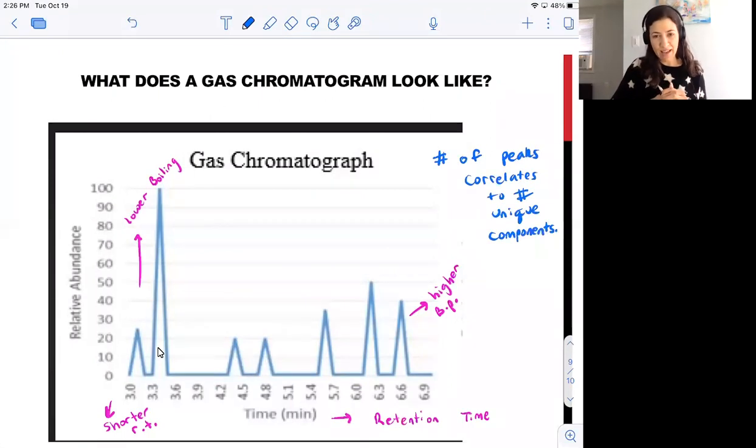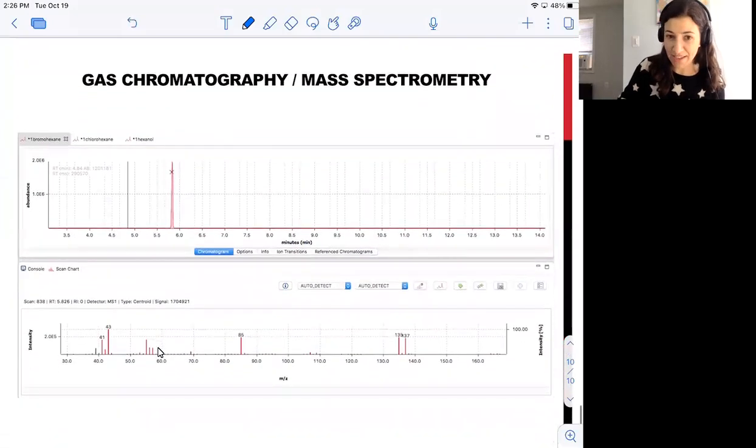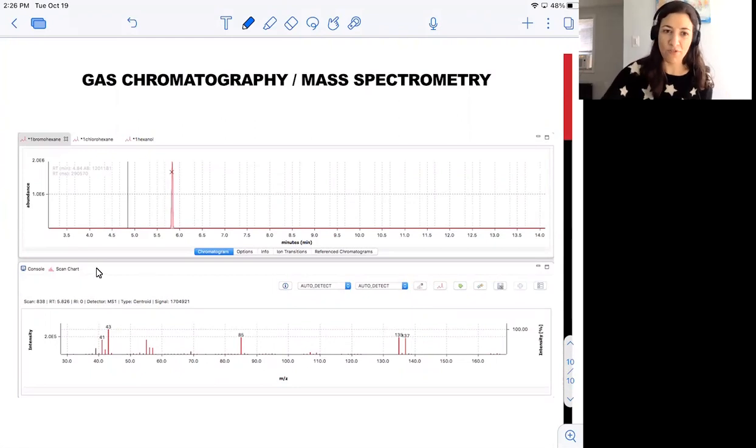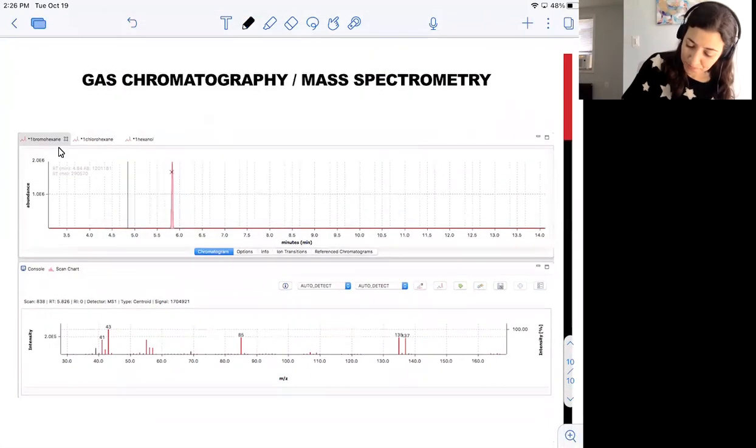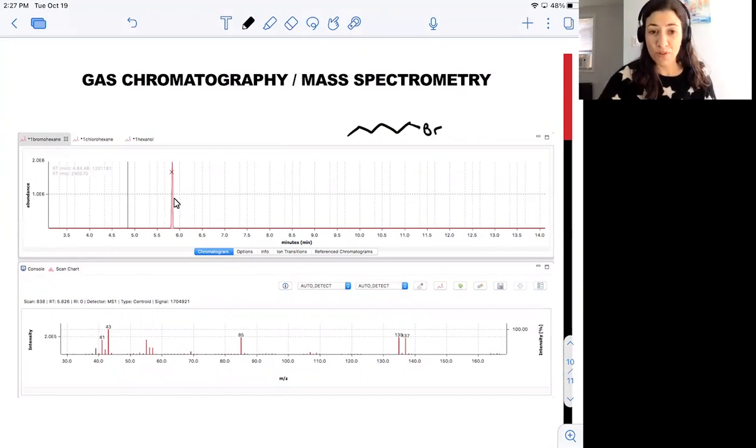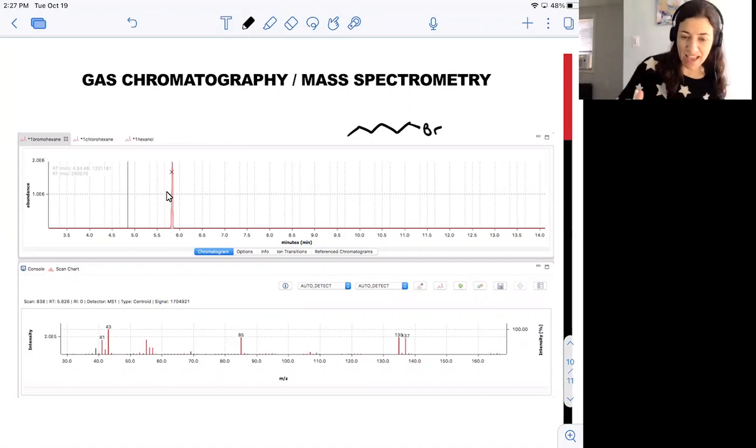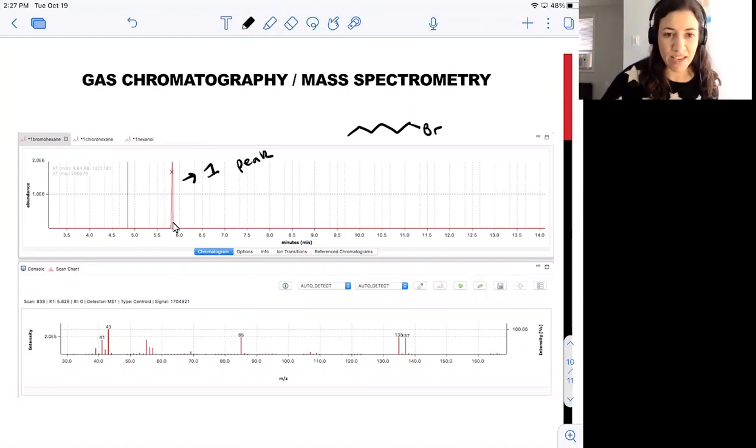On the instrument that we're using in lab with the data analysis software that you'll have access to, even from your own dorm room, your gas chromatogram will look something like this. This is a reference GC for the possible product 1-bromohexane. Because I've used very clean reference material, I am seeing one peak right here in my gas chromatogram. That tells me that my sample is nice and clean. You can see that my retention time is right here between five and a half and six minutes. When you're in the data analysis software, you can get a very accurate retention time for this peak by clicking on it.